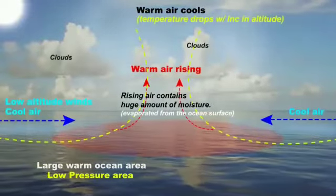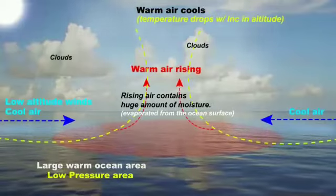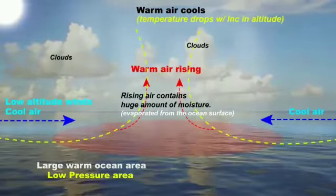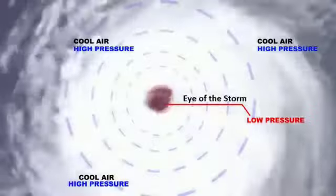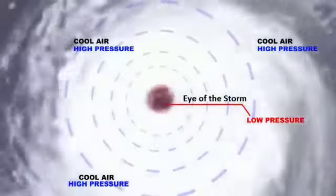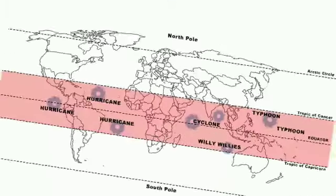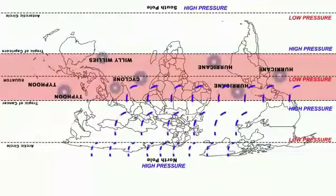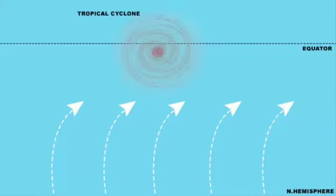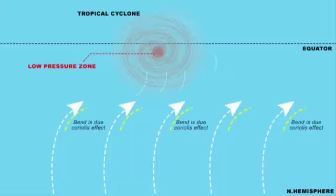Now the Coriolis force comes into effect. In the northern hemisphere, air is deflected slightly towards the right. Cool air gets attracted towards the center where a low pressure zone is forming. As cool air moves towards the center and gets deflected, the storm spins in an anti-clockwise direction.